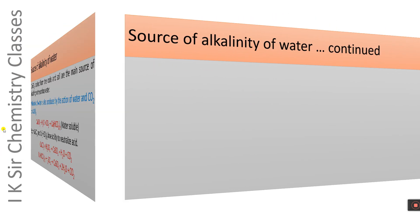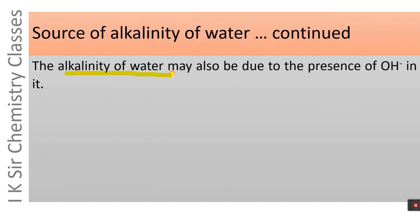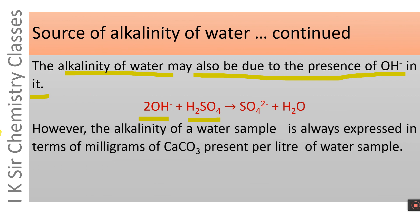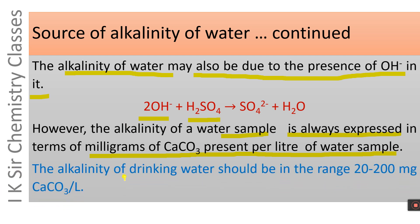However, the alkalinity of water may also be due to the presence of OH- ions, because OH- ions neutralize acid. We have seen that the alkalinity of water is due to the presence of calcium carbonate, calcium bicarbonate, and hydroxide ions. The alkalinity of a water sample is always expressed in terms of milligrams of calcium carbonate present per liter of water sample. The alkalinity of drinking water should be in the range of 200-500 mg CaCO3 per liter, which is the permissible alkalinity in drinking water.